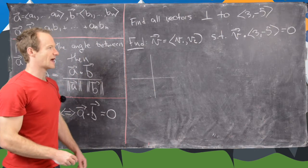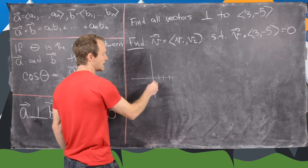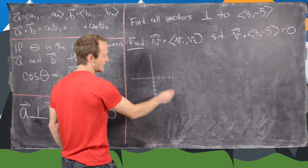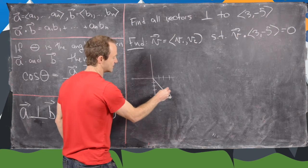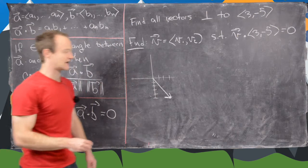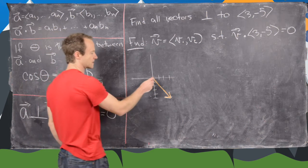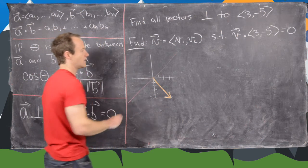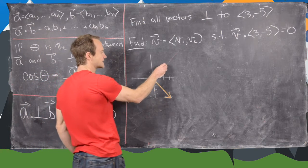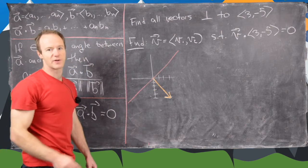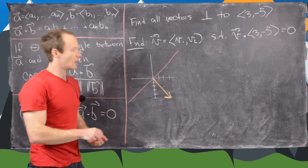So notice if we have our coordinate axis like this, our vector 3, -5 is pointing in this direction. So notice we have infinitely many vectors that are orthogonal to this, and they all lie on this line right here. So our algebraic solution should also come up with infinitely many vectors that lie on a line like this.